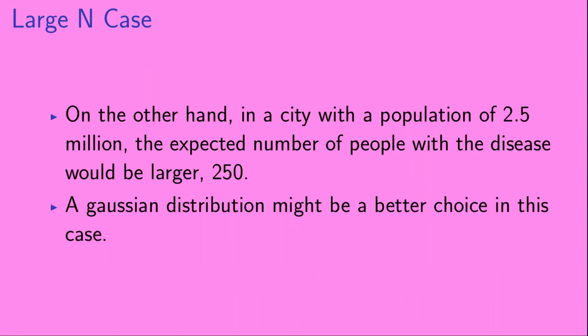On the other hand, in a city with a population of 2.5 million, the expected number of people with the disease would be larger, 250. A Gaussian distribution might be a better choice in this case.